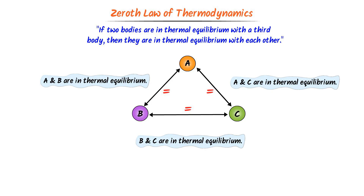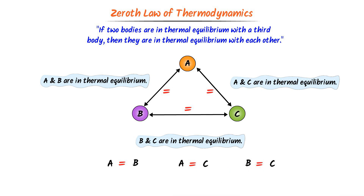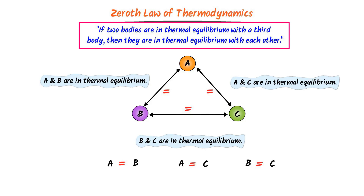Simply remember that if A equals B and A equals C, then B also equals C. It is just like a mathematical equation. The zeroth law of thermodynamics tells us that if two bodies are in thermal equilibrium with a third body, then the two bodies are also in thermal equilibrium with each other.